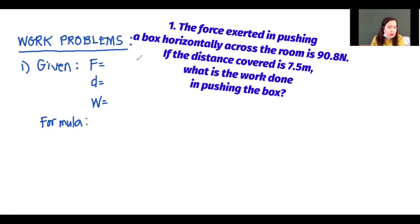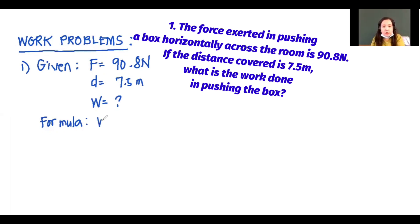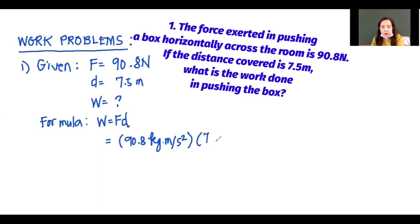For the given values, we have force equal to 90.8 N, and for the displacement, we have 7.5 M. We are looking for work. You already know that the formula is W equals force times displacement. So let us substitute: for the force, we have 90.8 N — or kilogram meter per second squared — times 7.5 M.